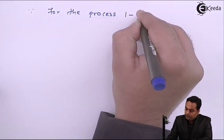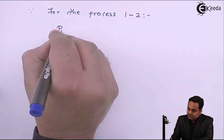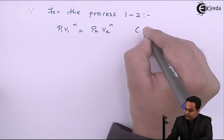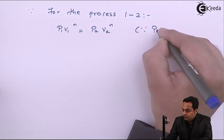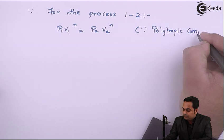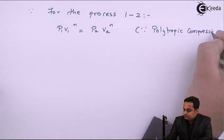1 to 2, we can write the relation as P1V1^n = P2V2^n, since it is a polytropic compression process.